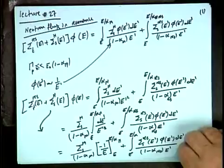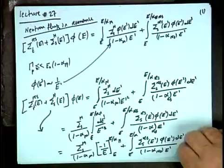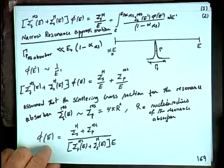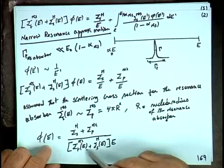We then looked at the flux shape in the resonance region, noticing it has the same 1/E shape but modified by σ_total in the resonance and the moderator cross-section.